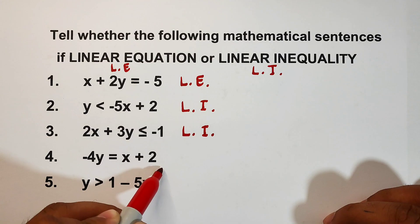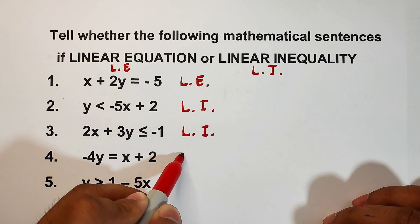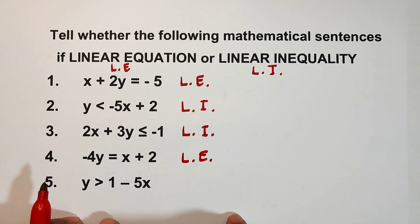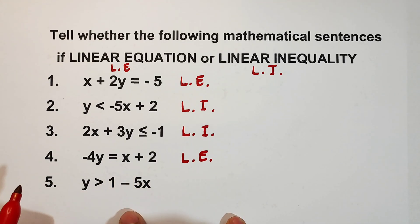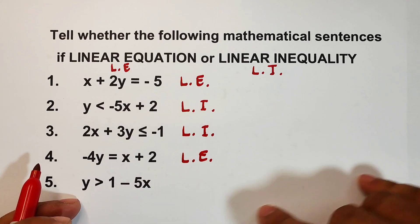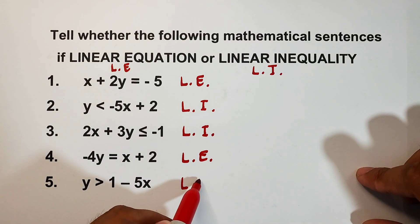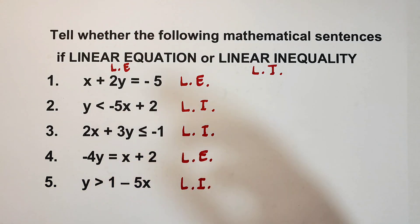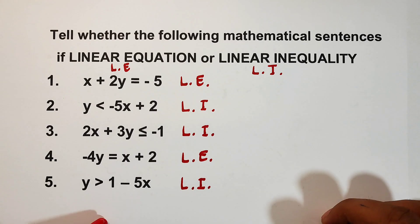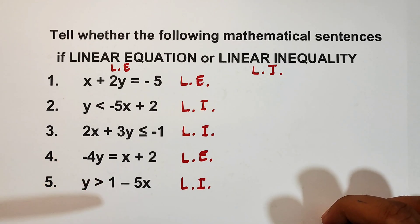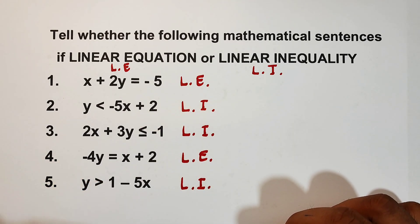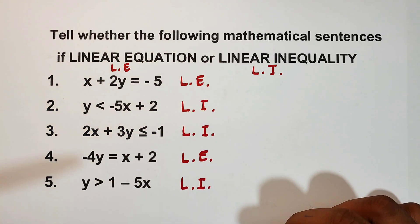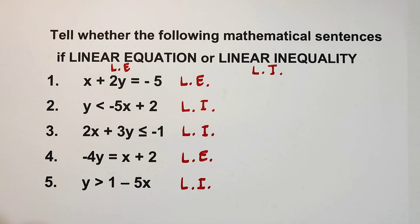Number four: negative 4y is equal to x plus 2. We have the equal sign, so this is a linear equation. Number five: y is greater than 1 minus 5x — this is an example of linear inequality. I hope you learned something from this part and now know how to identify whether a mathematical sentence is a linear equation or linear inequality.